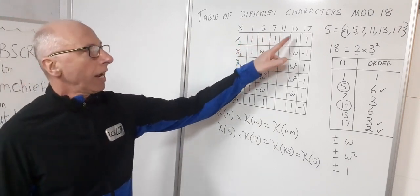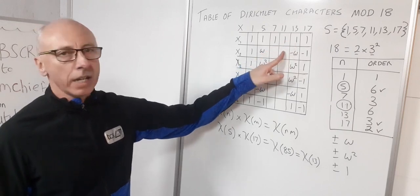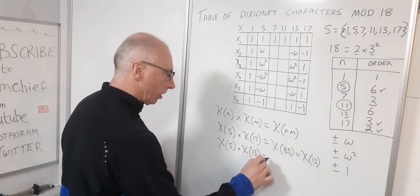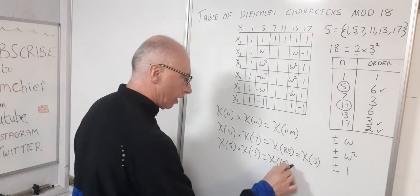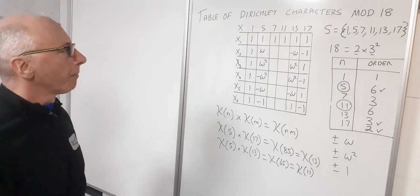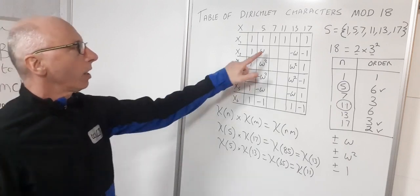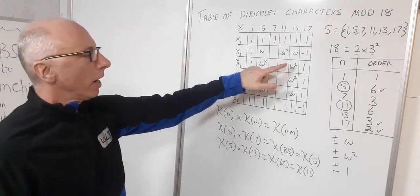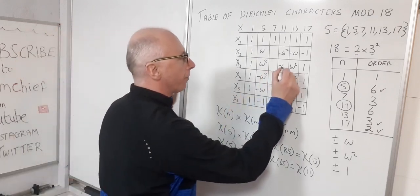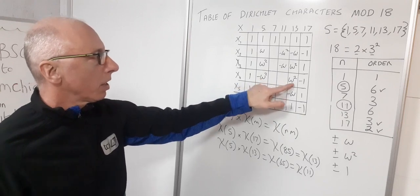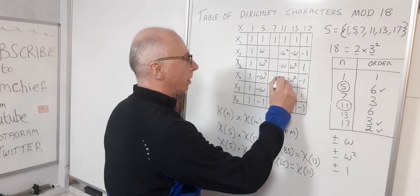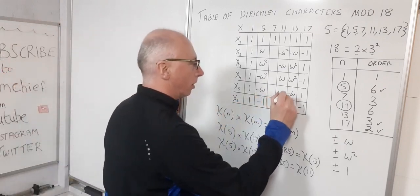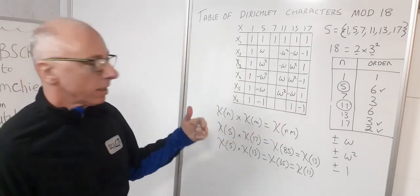Now for column 11: using χ(5)×χ(13) = χ(65) = χ(11) mod 18. Computing: ω×(−ω) = −ω²; ω²×ω² = ω⁴ = −ω; (−ω²)×ω² = −ω⁴ = ω (the conjugate); and −1×1 = −1. So column 11 is now filled.